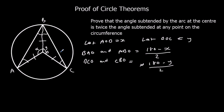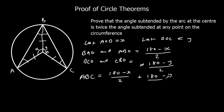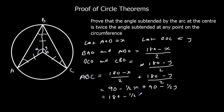Now we know a name for all of these angles. Angle ABC at the circumference is this plus this: (180 − X)/2 + (180 − Y)/2. When we simplify that by dividing each term by 2, we get 90 − X/2 + 90 − Y/2, which gives us 180 − X/2 − Y/2. So that's angle ABC, the angle at the circumference.